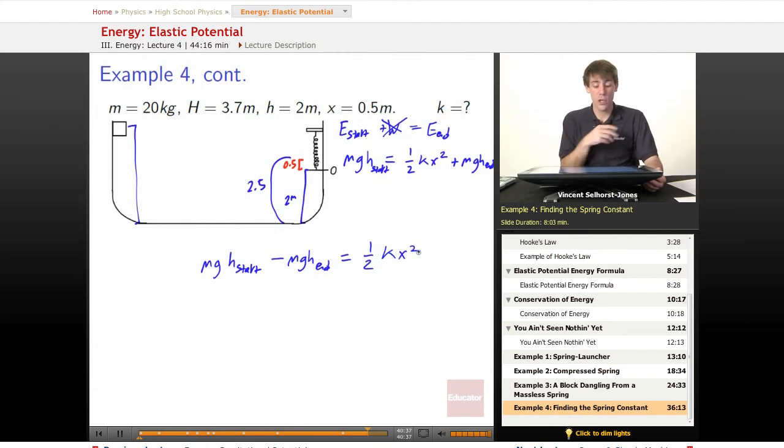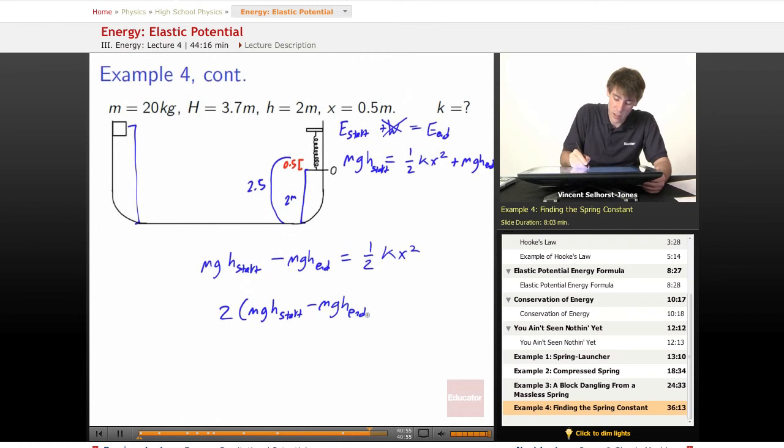We know what x is, we know what m is, we know what g is, we know what h at the start is, we know what h at the end is. We just plug and chug. So 2 times mgh start minus mgh end equals k, and we're also going to divide by that x squared.